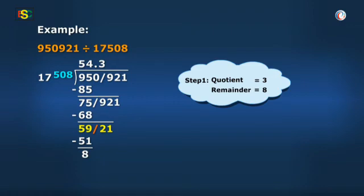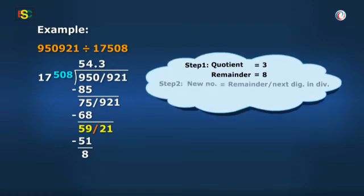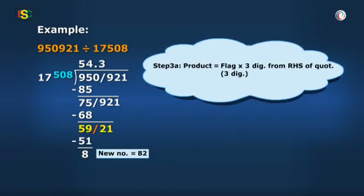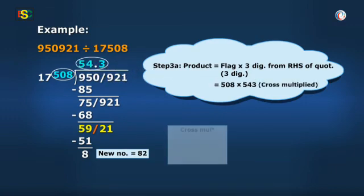Good. Find one more quotient digit and finish the question. 82 is the new number formed. And cross multiplying flag 508 with 543 gives 15 plus 0 plus 40 equal to 55.